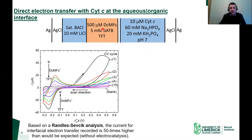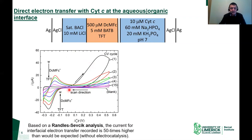Now let's add the organic electron donor decamethylferrocene to the TFT organic phase and observe the electrochemistry. With the sacrificial oxidant present, there is much more activity in the cyclic voltammogram — two distinct processes. Cyclic voltammograms at liquid-liquid interfaces can show both ion transfer and electron transfer processes. At negative potentials, there is an ion transfer of decamethylferrocene cations, produced when the electron donor reduces cytochrome C. There is also a large electron transfer process — the transfer of electrons from decamethylferrocene to cytochrome C in the aqueous phase.